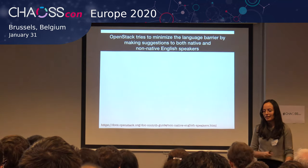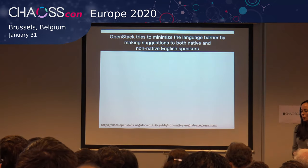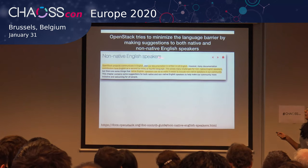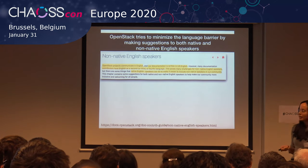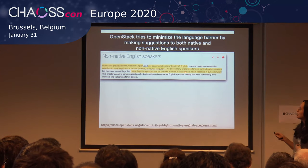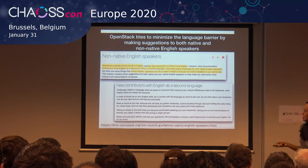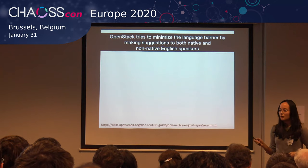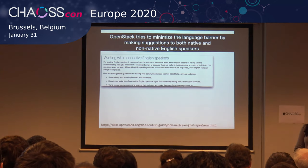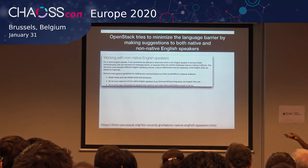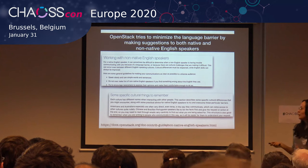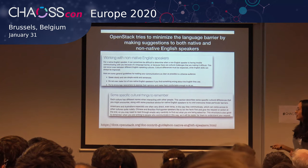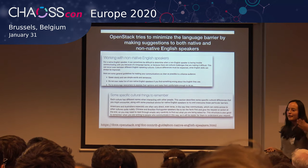One thing that might be a starting point is to do what OpenStack does nowadays. They have documentation saying that their documentation is written in American English, and they acknowledge this might be a challenge for non-native English speakers, so they provide some guidelines. They show how new contributors should work if they have English as a second language, how native English speakers should work with non-native English speakers, and they also provide cultural things to remember — for example, Americans and Australians are more direct to the point, while Chinese and Portuguese speakers first list the facts and then make the request.